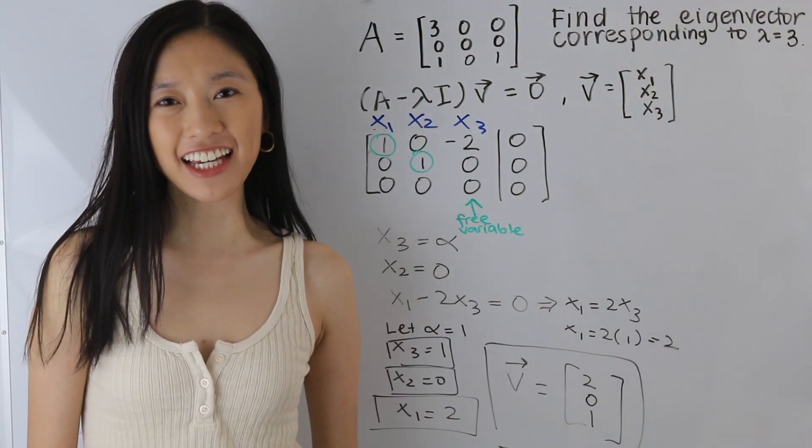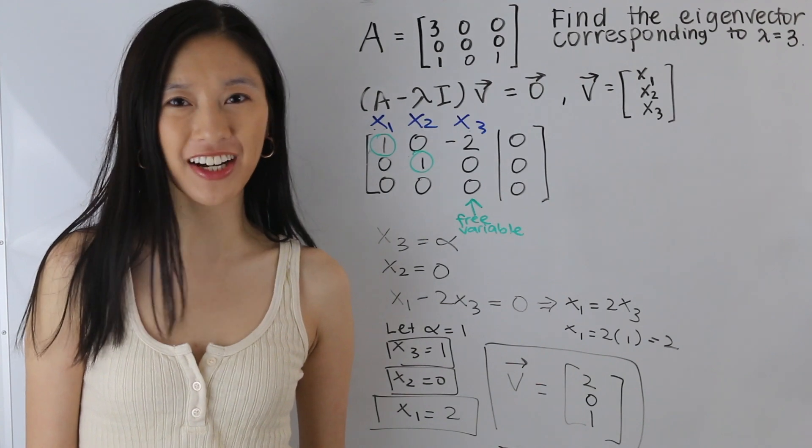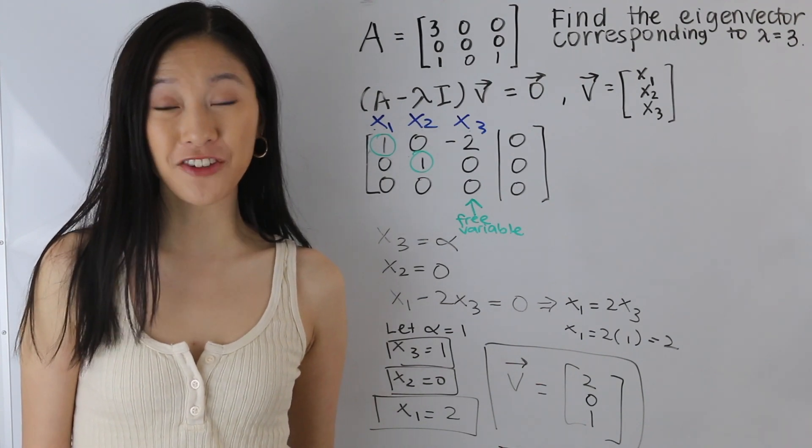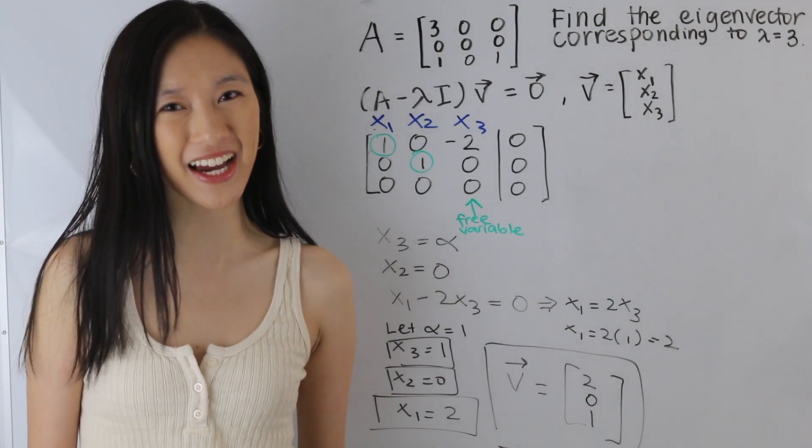And that is how you find the eigenvector corresponding to an eigenvalue of a 3x3 matrix. Thank you guys so much for watching. Don't forget to like, comment, and subscribe. And I'll see you guys in the next one. Bye!